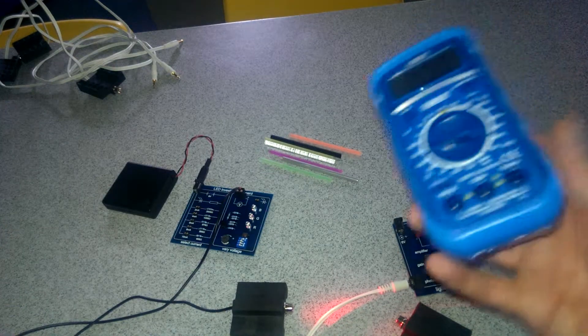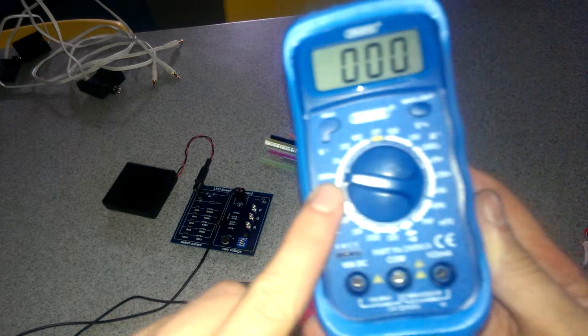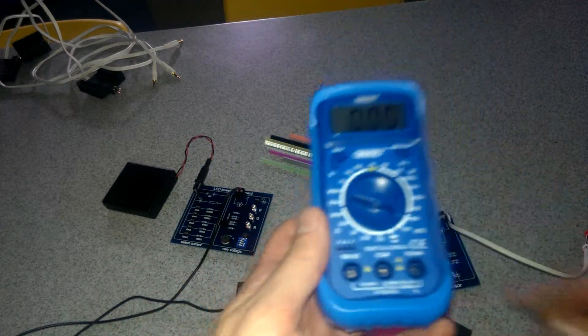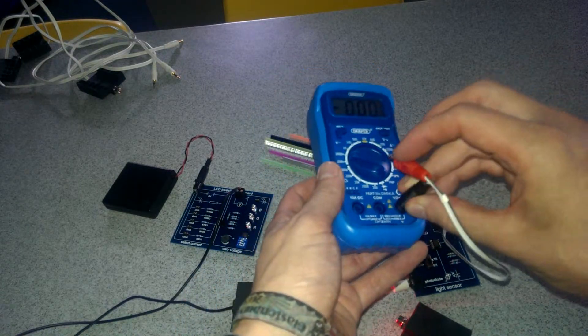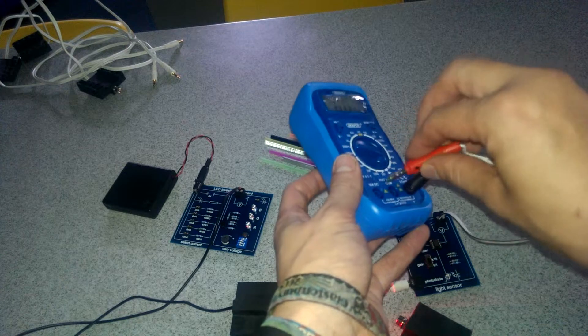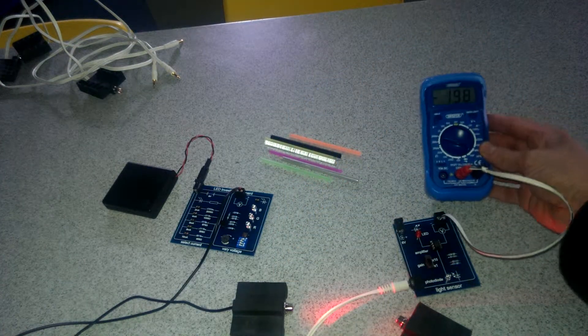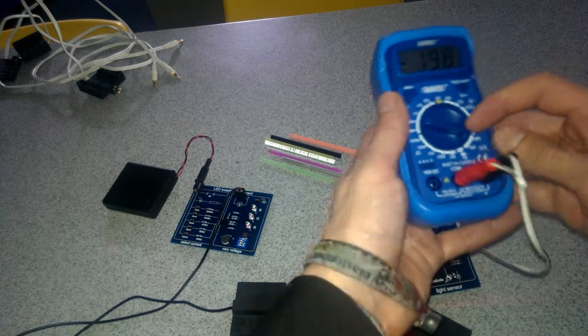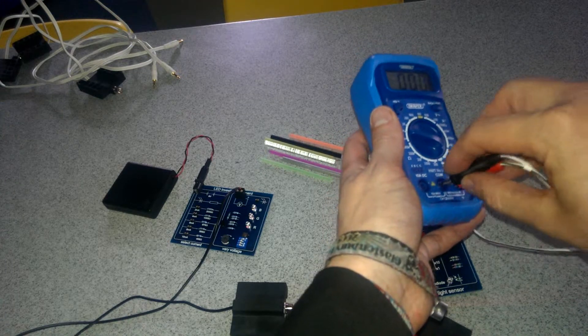You then need a voltmeter. This should be set to 2000m which means 2000 millivolts on the left hand side. At the moment it should read zero because you have nothing connected to it. Plug your two leads into the voltmeter. If your voltmeter reads a minus number take them out again and switch them around until it reads a positive number.